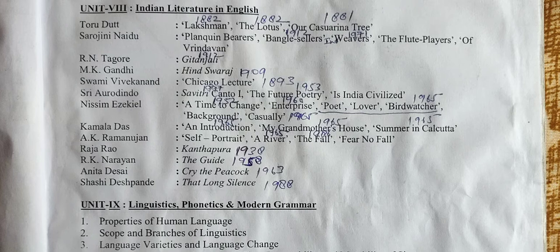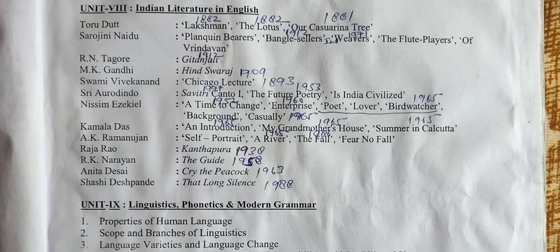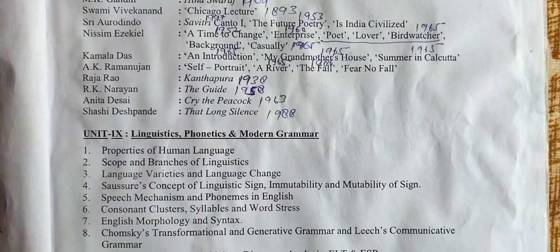Indian Literature in English. Toru Dutt — Lakshman, The Lotus, Our Casuarina Tree. Sarojini Naidu — Palanquin Bearers, Bengal Sailors, Weavers, The Flute Players of Vrindavan. M.K. Gandhi — Hind Swaraj. Swami Vivekananda — Chicago Lectures. Sri Aurobindo — Savitri, The Future Poetry, Is India Civilized. Nissim Ezekiel — Night of the Scorpion, Enterprise, Poet, Lover, Birdwatcher, and Background Casually. Kamala Das — An Introduction, My Grandmother's House, Summer in Calcutta. A.K. Ramanujan — Self-Portrait, A River, The Fall. Raja Rao — Kanthapura. R.K. Narayan — The Guide. Anita Desai — Cry the Peacock. Shashi Deshpande — That Long Silence.